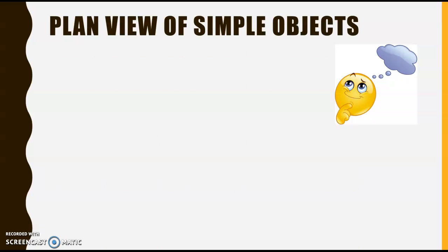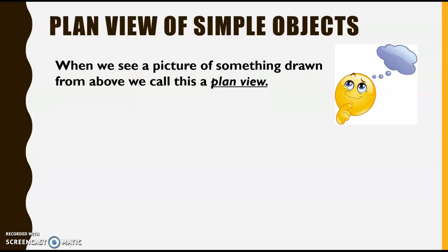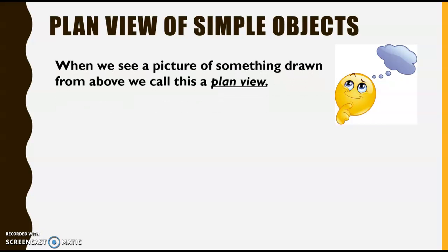If pictures are not drawn from the side, then where are they drawn from? If pictures are not drawn from the side, they are drawn from above. When we see a picture of something drawn from above, we call this a plan view.